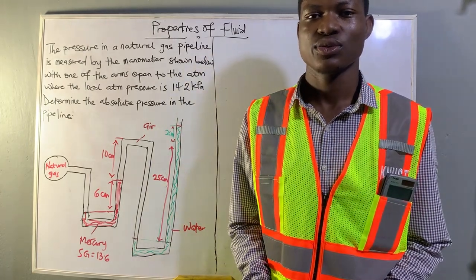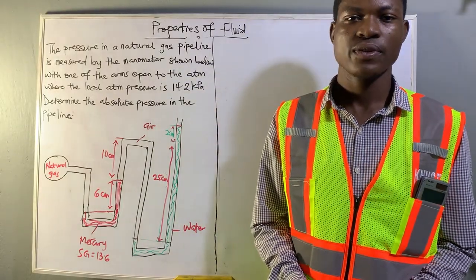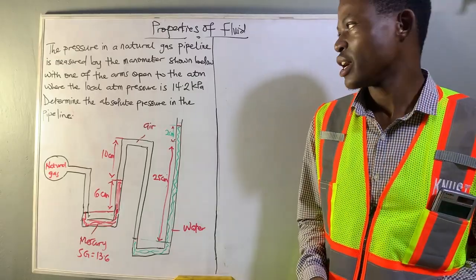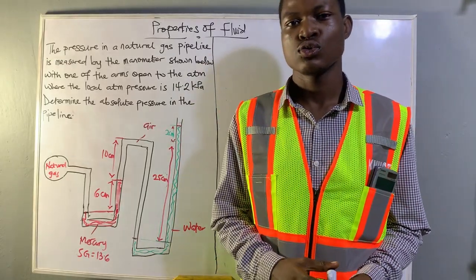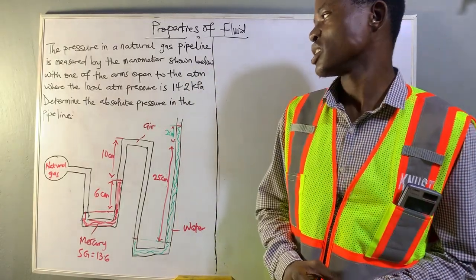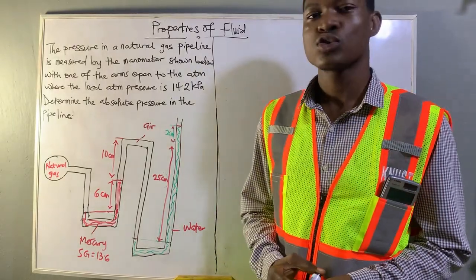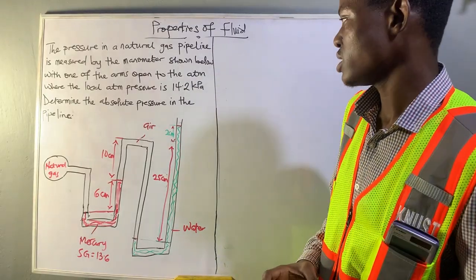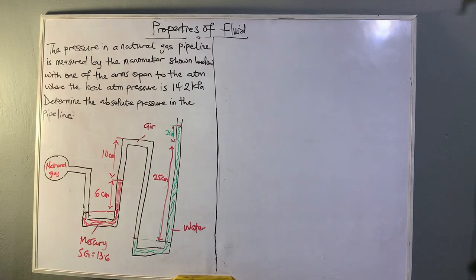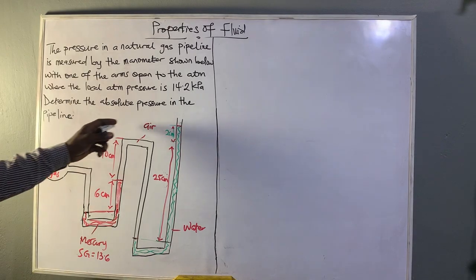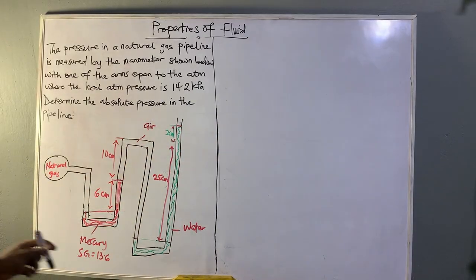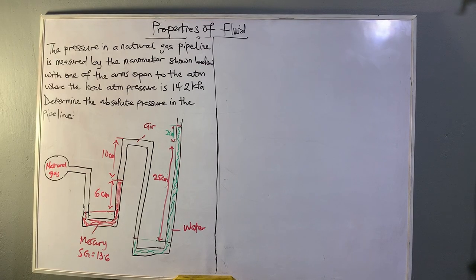Welcome back to this channel. In this section we'll be discussing properties of fluid, specifically pressure in a manometer. This question will help us understand how to calculate pressures pertaining to a manometer. The pressure in a natural gas pipe is measured by the manometer shown, with one of the arms open to the atmosphere where the local atmospheric pressure is 14.2 kilo Pascal. We need to determine the absolute pressure in the pipeline.